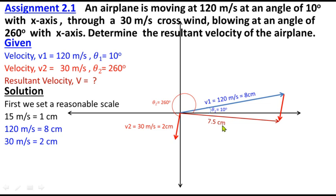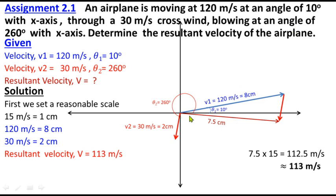Measuring, we find it is 7.5 centimeters. So 7.5 times 15 equals 112.5 meters per second, which is equivalent to almost 113 meters per second. So this is our resultant velocity: V equals 113 meters per second. We can also measure the angle using the protractor.